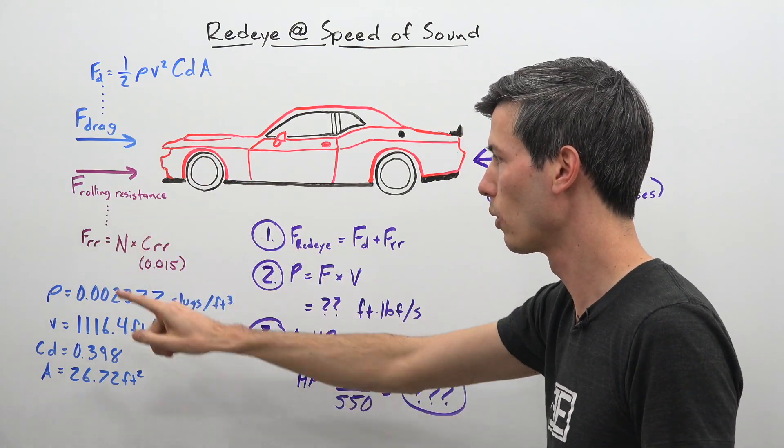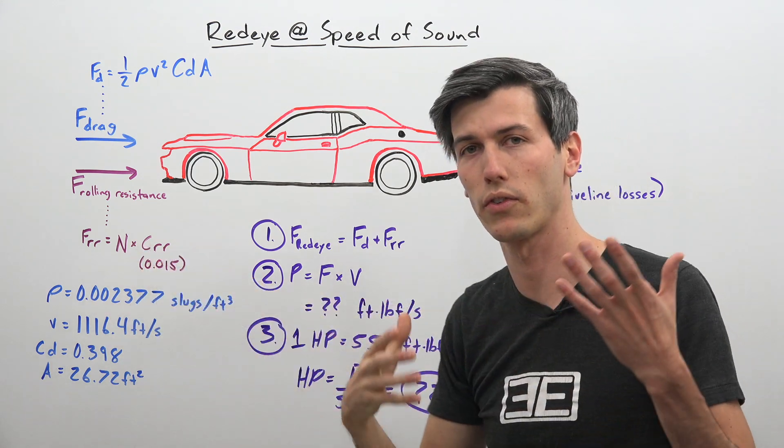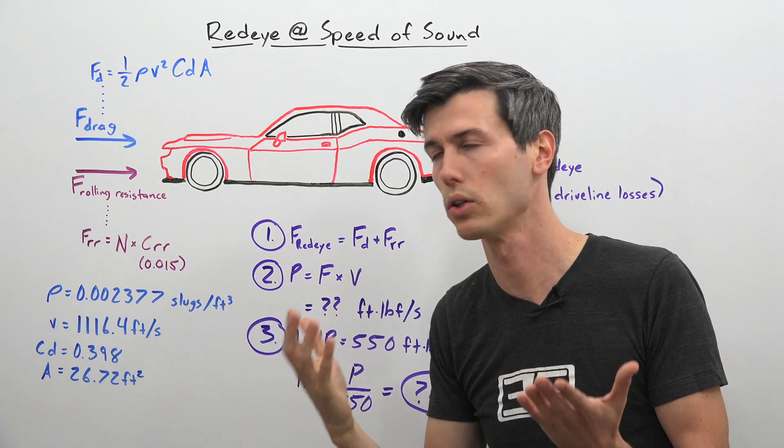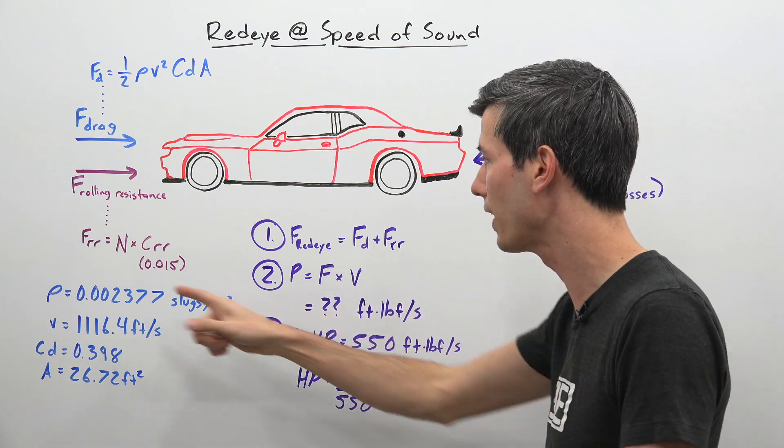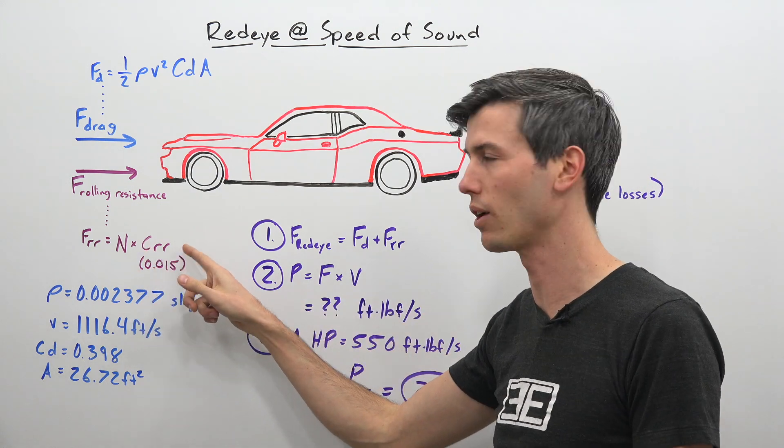Plus the second part, the force of rolling resistance, which is equal to the normal force—in other words the weight of the car, which you'll have to look up for a Challenger Hellcat Red-Eye—multiplied by the coefficient of rolling resistance, 0.015.